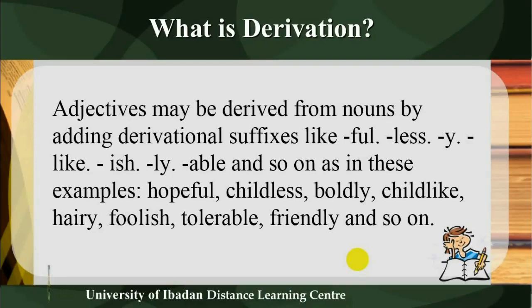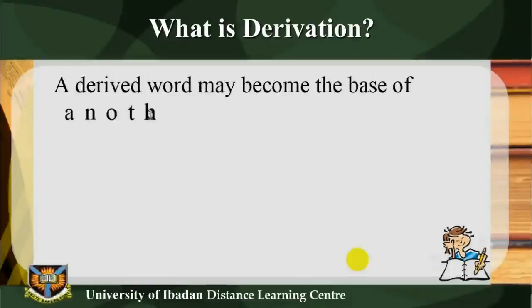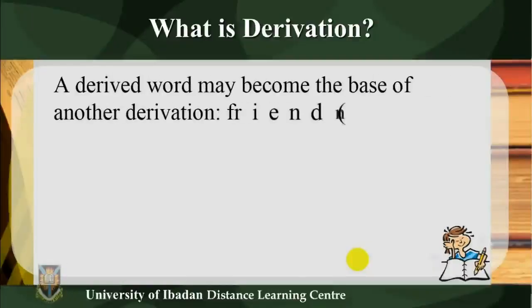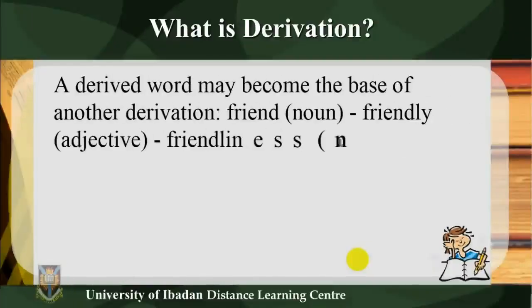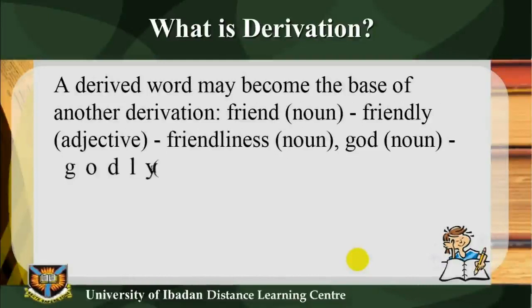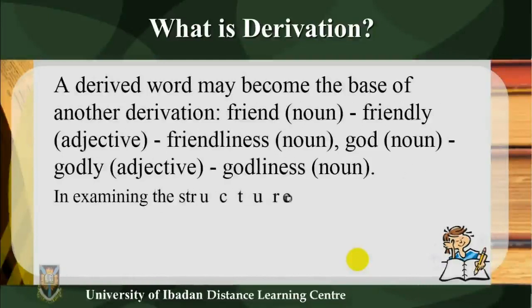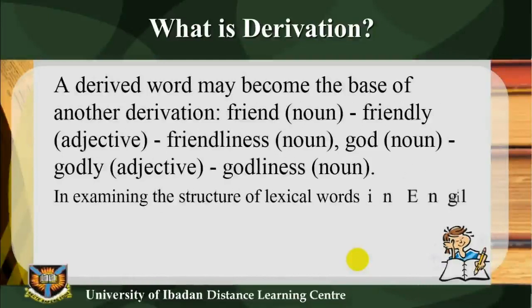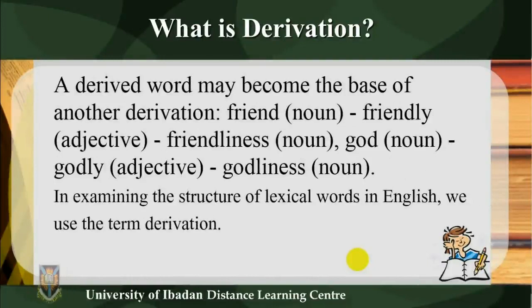A derived word may itself become the base of another derivation. For example: 'friend' (noun) → 'friendly' (adjective) → 'friendliness' (noun); 'god' (noun) → 'godly' (adjective).